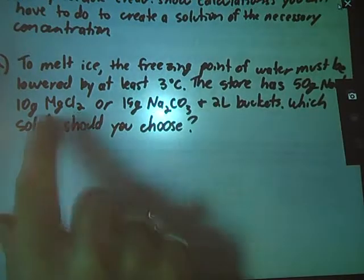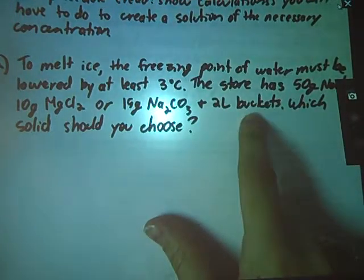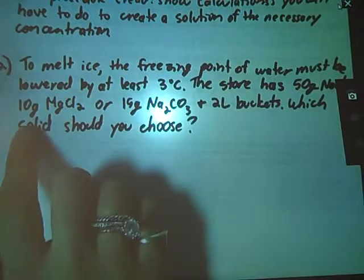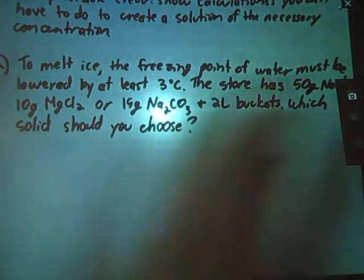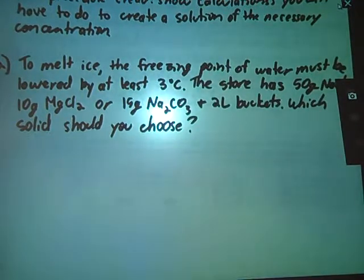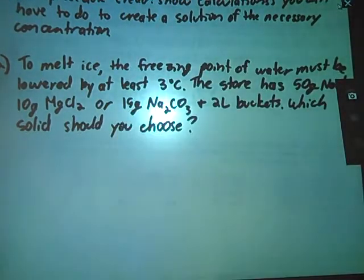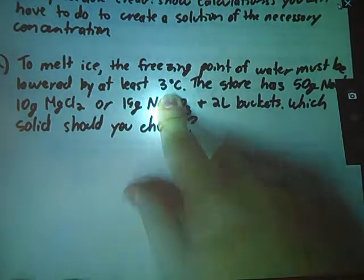The store has three different chemicals and two liter buckets, so I've got a volume. I can convert these to moles, so I can figure out molarities or molalities. And this one asks, which solid should I choose? So I need to figure out which of those three amounts of solid are going to give me a depression in my freezing point of 3 degrees.